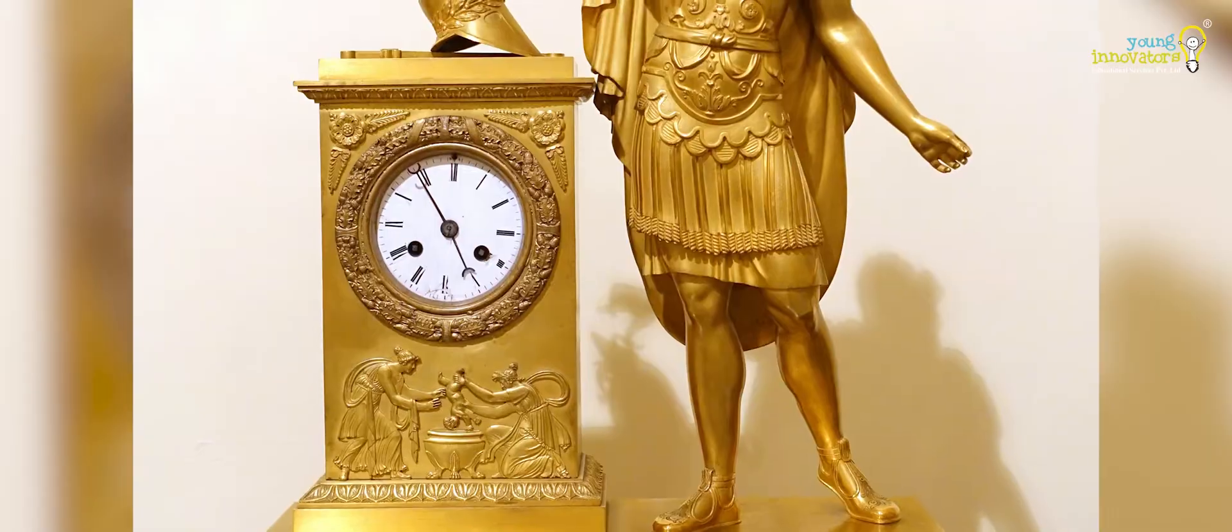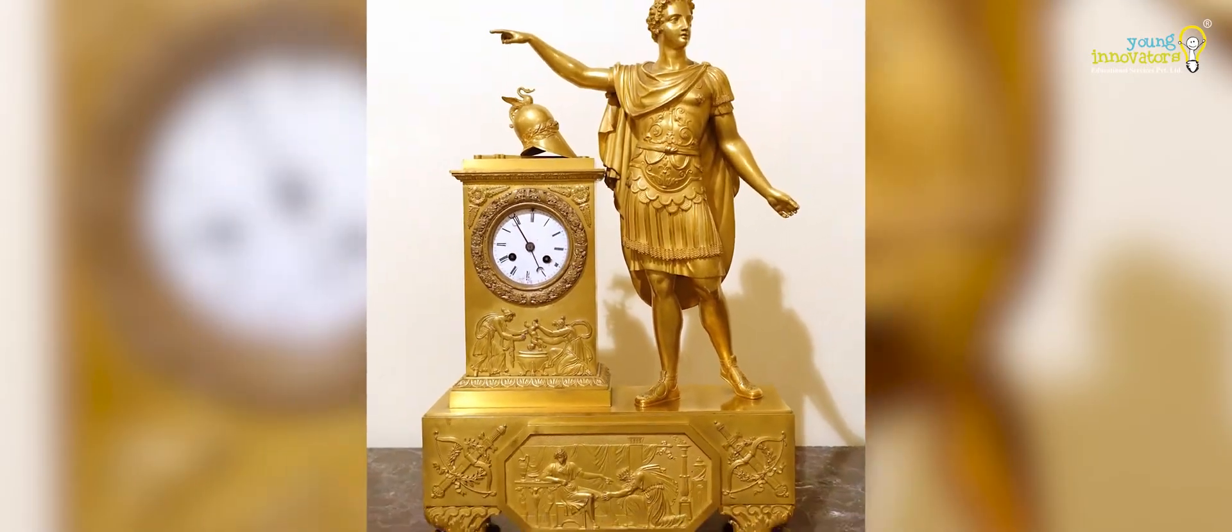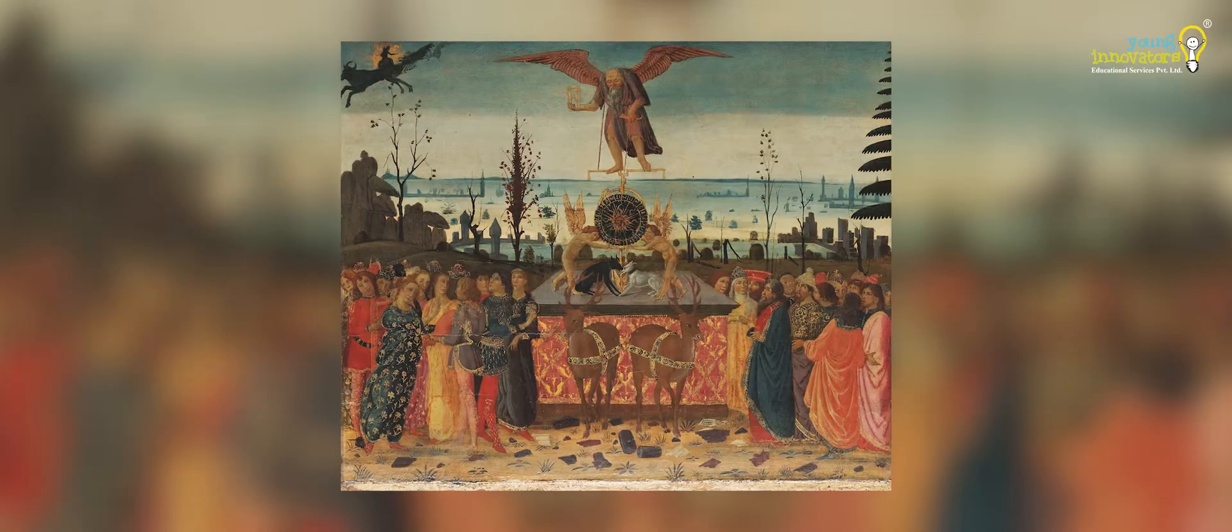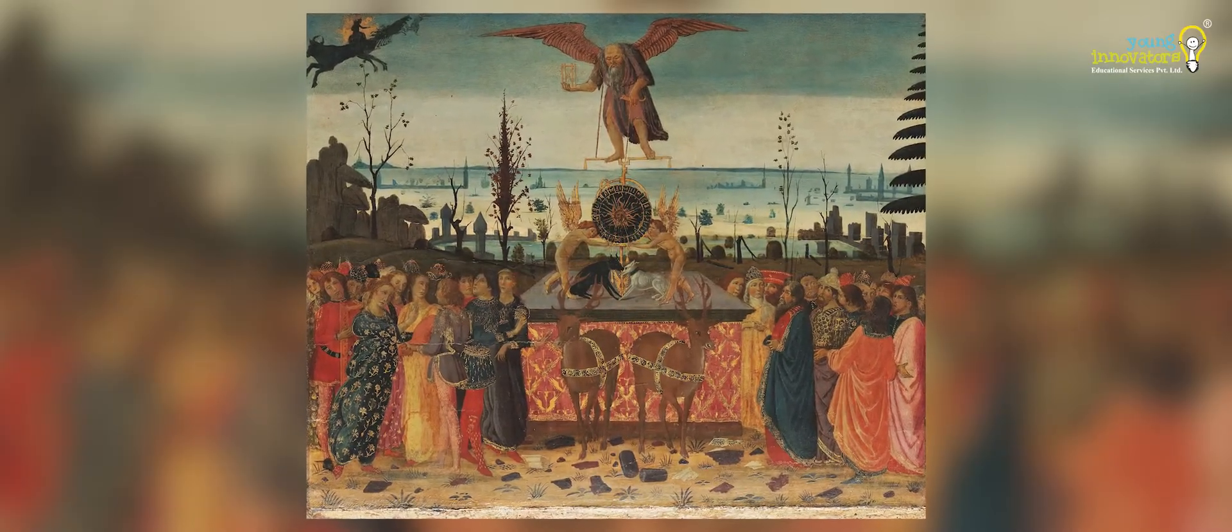Accurately measuring time allowed societies to plan their activities, mark seasons and align their lives with the natural cycles of the earth. But before modern clocks, how did people keep track of time?